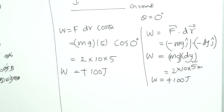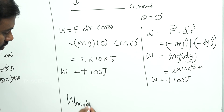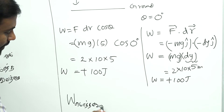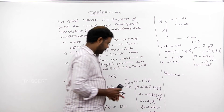So the two answers are: minus 100 joules when going up, and plus 100 joules when coming back down. The total value combines both.